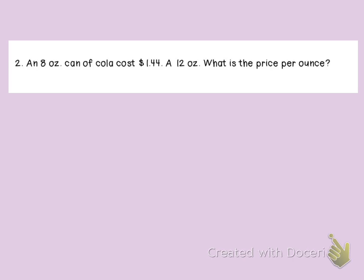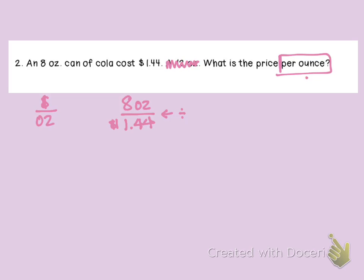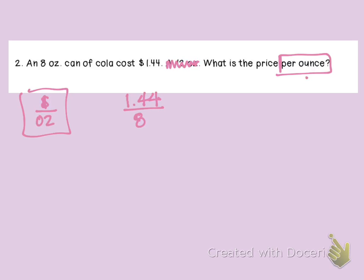An eight-ounce can of cola costs $1.44. What is the price per ounce? 'Per ounce' tells us that ounce is our one unit of measure and goes on the bottom, so it should be money over ounces. It's very important to write your ratio with words first — money goes on top and ounces go on the bottom.